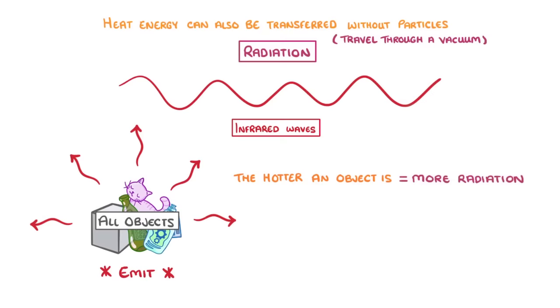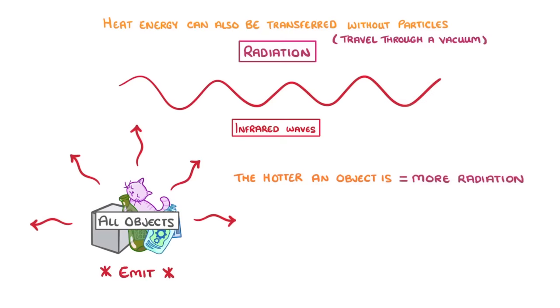All objects constantly absorb and emit radiation. And in reality, they do both at the same time. Importantly, the hotter the object is, the more radiation it emits. This is why it feels hot to put your hand over a barbecue, even if you're not touching it. The very hot metal and coal is emitting infrared radiation, which is absorbed by your hand.